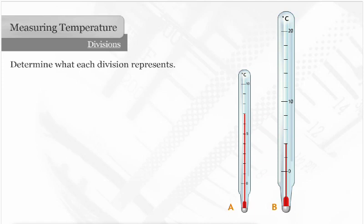Thermometer B has a marked division every 10 degrees. Each unmarked division represents 2 degrees. So the temperature is 4 degrees Celsius.